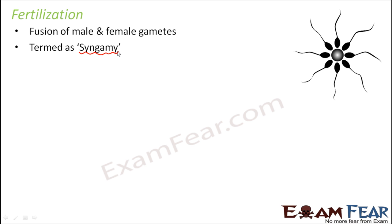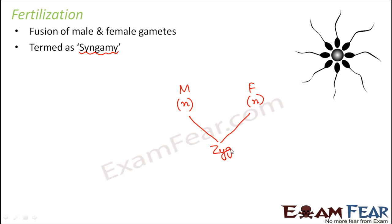There is a male gamete and a female gamete; both of these gametes are haploid. These two gametes fertilize together and form a zygote, which is diploid. This zygote will then gradually develop to form the embryo, and the embryo will finally form a new organism.